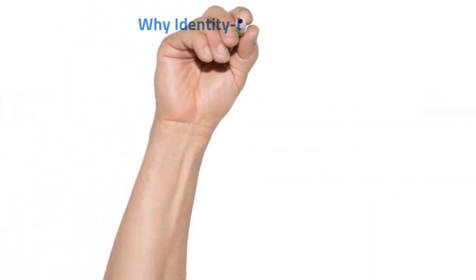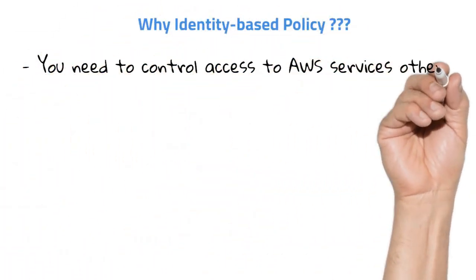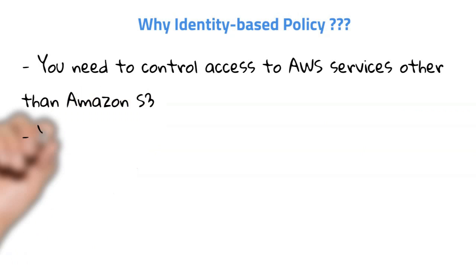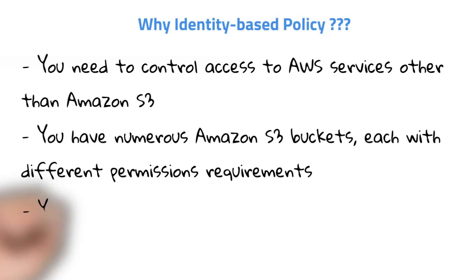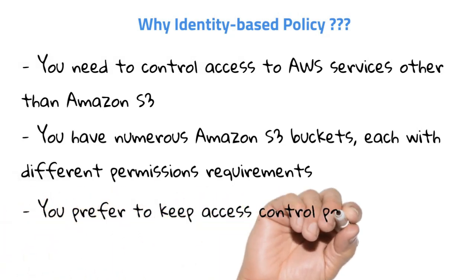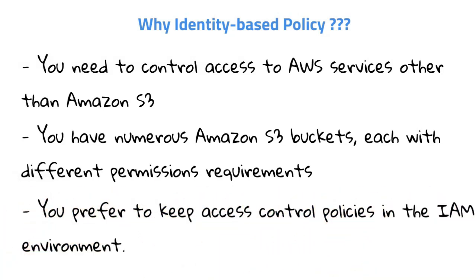To manage access to AWS services other than Amazon S3 buckets, it's recommended that you utilize IAM policies for centralized management of permissions. By using fewer IAM policies, you can effectively manage the various permissions required for your multiple Amazon S3 buckets rather than defining a large number of individual bucket policies. This approach enables you to maintain a more streamlined and manageable access control policy environment in IAM.